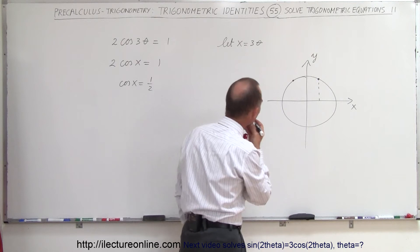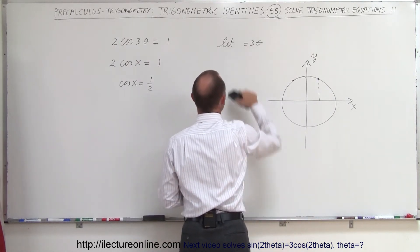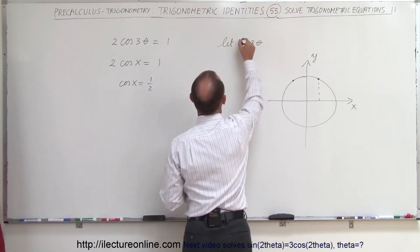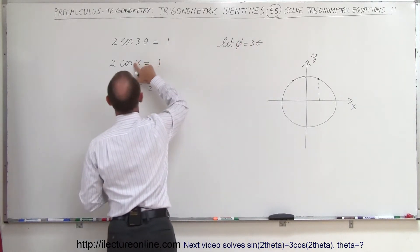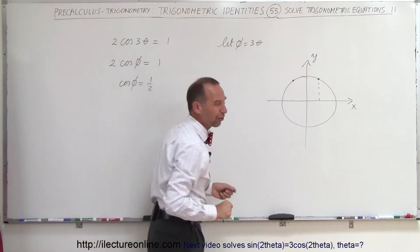And of course, by using x, I may have confused you a little bit. Maybe we should use something slightly different than x. Instead of x, I'm going to use phi, a different angle. Let's call it phi. That way, we don't confuse it with the x on the unit circle.